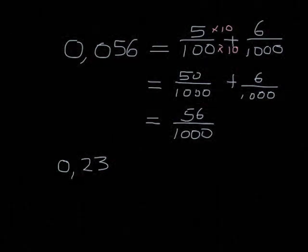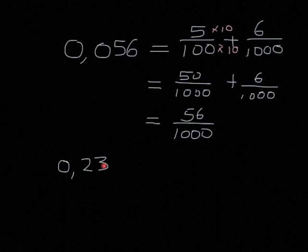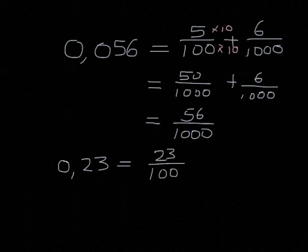Using the little trick, we can say there are 1, 2 places after the decimal comma, so we need to have 1, 2 zeros in the denominator. And you should be able to see quite easily that we do get the correct answer doing this, because 0.23 is equal to 23 over 100.